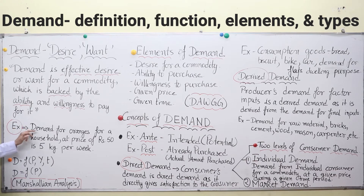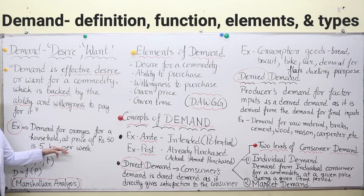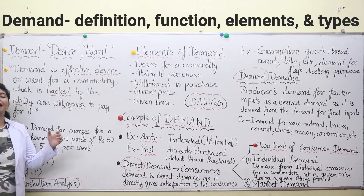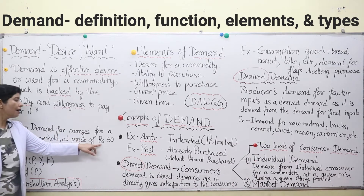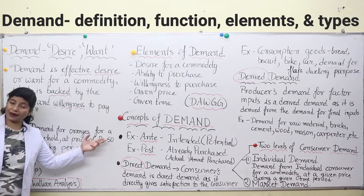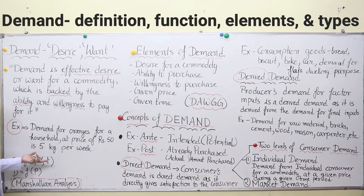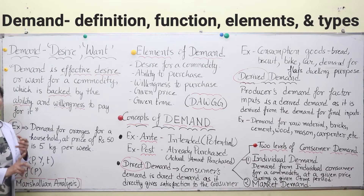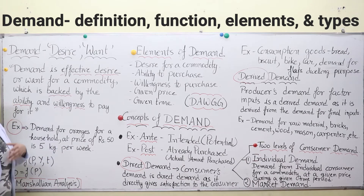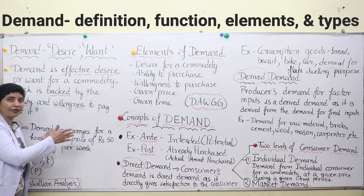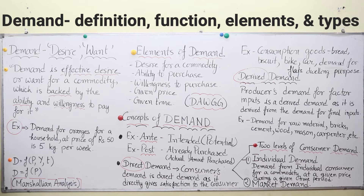Here is an example: demand for oranges for a household at a price of rupees 50 is 5 kg per week. Demand is never taken in absolute conditions — it is taken in relative conditions. It is related to the price at which it is sold in the market and the time frame, which may be one day, one hour, a market period of one or two days, a month, a year, a decade, or a century. The time frame in which demand is considered is very important.